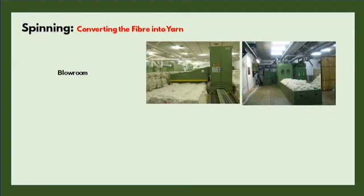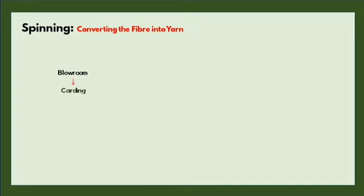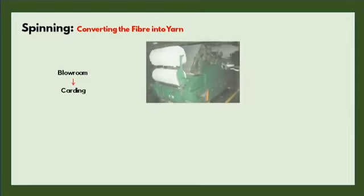In older blowroom lines, the bales were fed and a lap was produced. But nowadays, in modern machines, a tuft-feed system is used, where the flocks are directly transferred to the next machine. The next machine is a carding machine. As you can see in the photo, this is an old carding machine, where a lap produced on the blowroom line was fed. Nowadays, flocks are directly transferred to the carding machine. On the blowroom machine, the material was opened and cleaned.